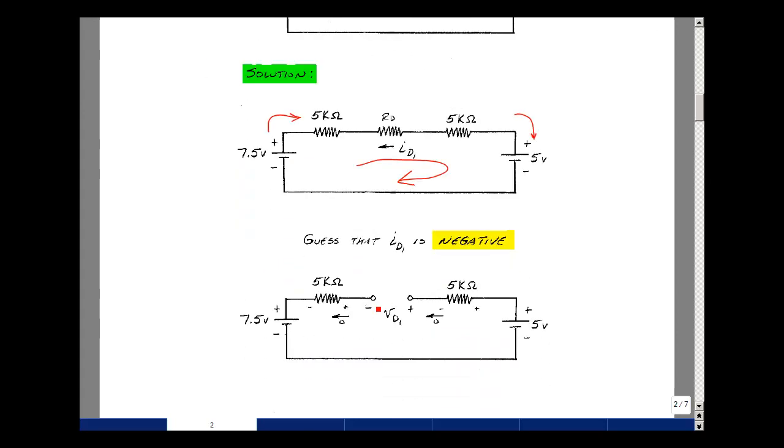Now label everything you can on the drawing. Given the open circuit, there's no current in the 5k resistor and in the other 5k resistor, so the voltage across it's going to be zero.